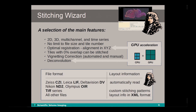Regarding file formats, Huygens will recognize CZI from Zeiss, Leica LIF, Delta Vision, Nikon, NV2 and Olympus OIR files if they contain tile information. Also, the layout of the tiles will be automatically read from these files. Any series of tile images of TIFF can be read in as a tile series and the layout can be customized within the Stitcher Wizard. All other files can be used with the Stitcher Wizard if the position information is known and supplied as an XML file.